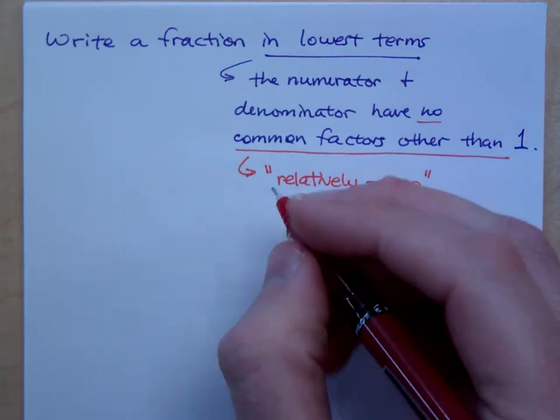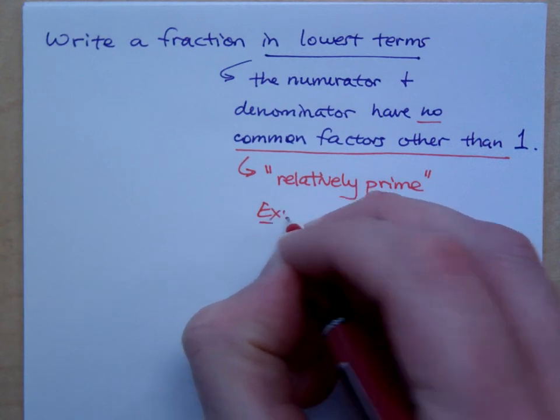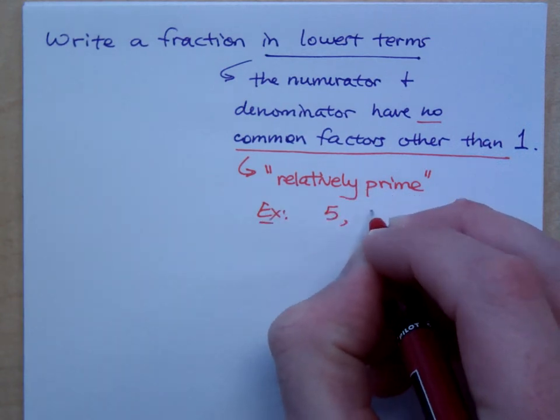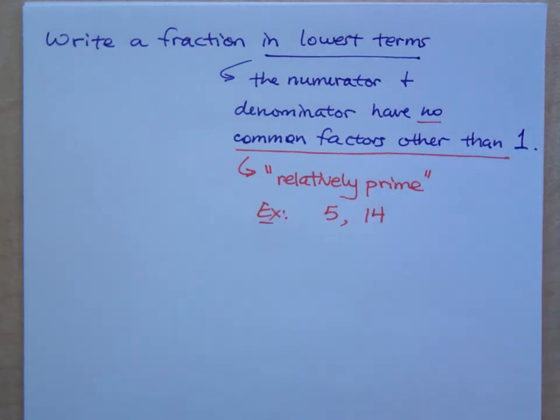An example of relatively prime numbers would be the numbers 5 and 14. Do they have any factors in common other than 1? Is there a number that can go into 5 and 14 other than 1? No, so these guys are relatively prime.